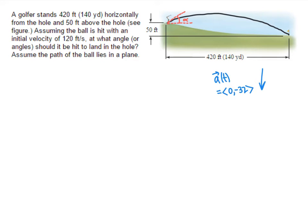So that means that my velocity vector, v of t, is going to be the antiderivative of a of t. So that will work out to be 0 comma negative 32t, plus some constant vector c.